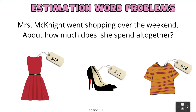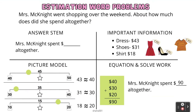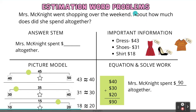Let's go ahead and try another example. Mrs. McKnight went shopping over the weekend. About how much does she spend all together? We see that there are three items she bought: a dress, shoes, and a shirt. Our answer stem restates the question, so our answer stem is: Mrs. McKnight spent blank all together. We know she bought a dress for $43, shoes for $31, and a shirt for $18. But remember, it says 'about,' so we're going to round these numbers first and then solve the problem.